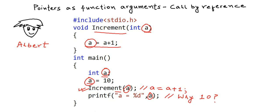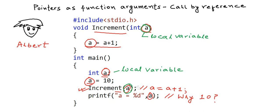What Albert probably forgot is that whenever we declare a variable inside a function, we call that variable a local variable — we can access it only inside the same function in which it was declared. So the 'a' in the function increment and the 'a' in the function main are actually not the same variable. When main calls increment and passes a as argument, only the value of a is copied to another variable local to the increment function.